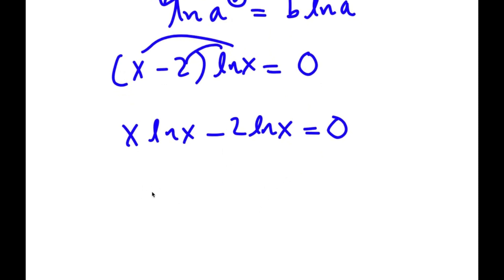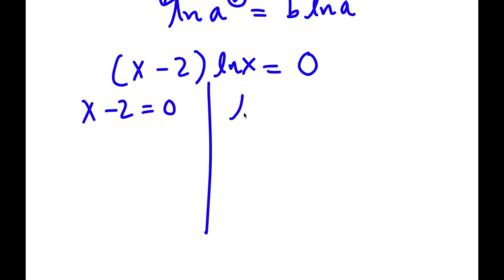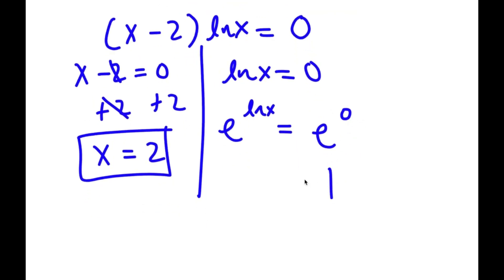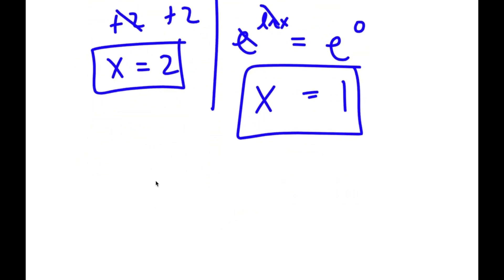Actually, there's no need to distribute — instead, I'll split this into two equations: x minus 2 equals 0, and ln x equals 0. For x minus 2 equals 0, adding 2 to both sides gives x equals 2 — that's one solution. For ln x equals 0, taking e to the power of both sides gives x equals 1, since e and ln cancel. So the two solutions are x equals 2 and x equals 1.